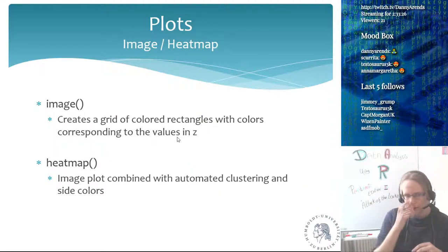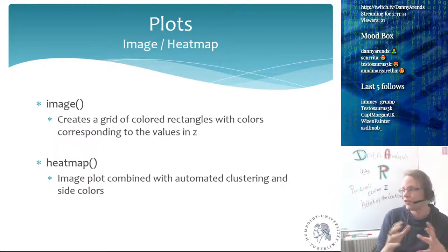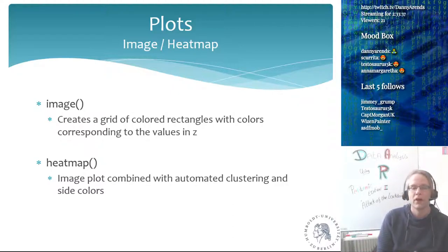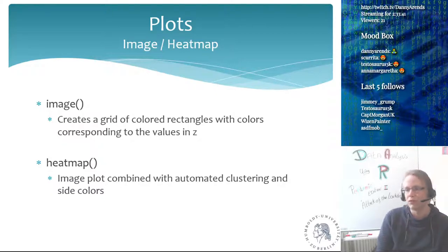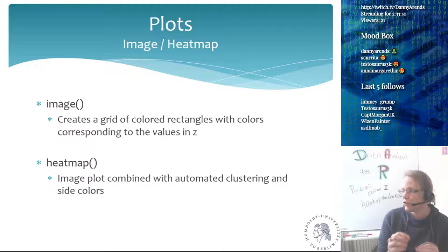The image function creates a grid of colored rectangles with colors corresponding to values in the matrix. The heatmap function is different — less flexible, but it has the advantage of automatic clustering and side colors, meaning for each individual you can designate their group (e.g., high or low treatment) using two or three colors drawn at the side.